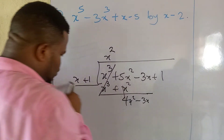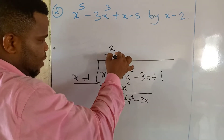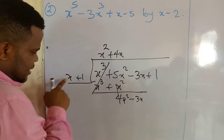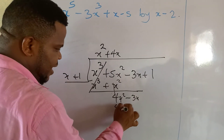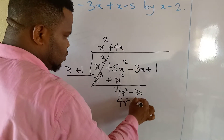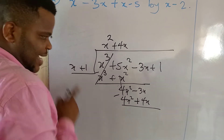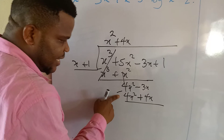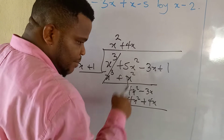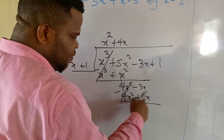We bring down the next term, minus 3x. Now x goes into 4x squared giving plus 4x. Then 4x times x is 4x squared, and 4x times 1 is plus 4x. We draw a line and introduce the minus sign again — this minus affects everything below.